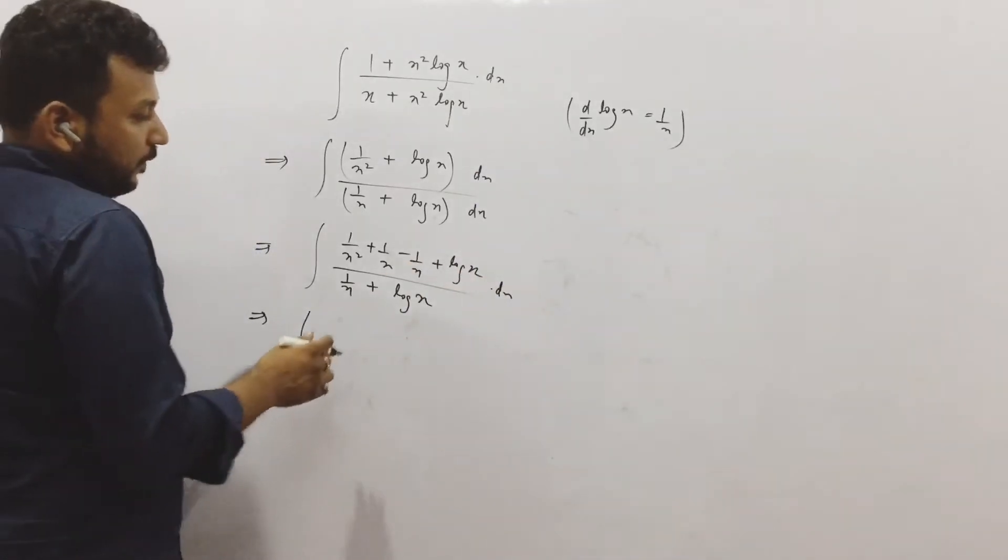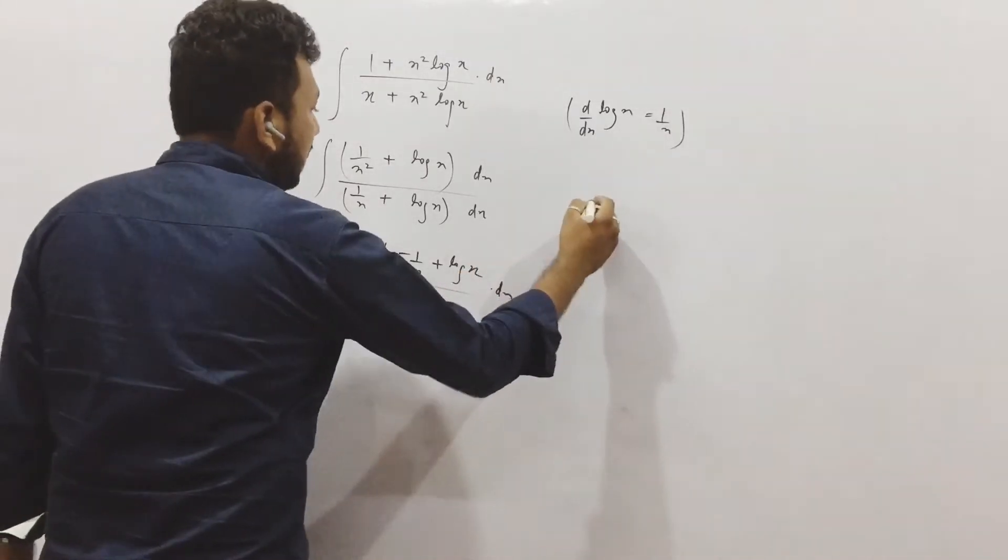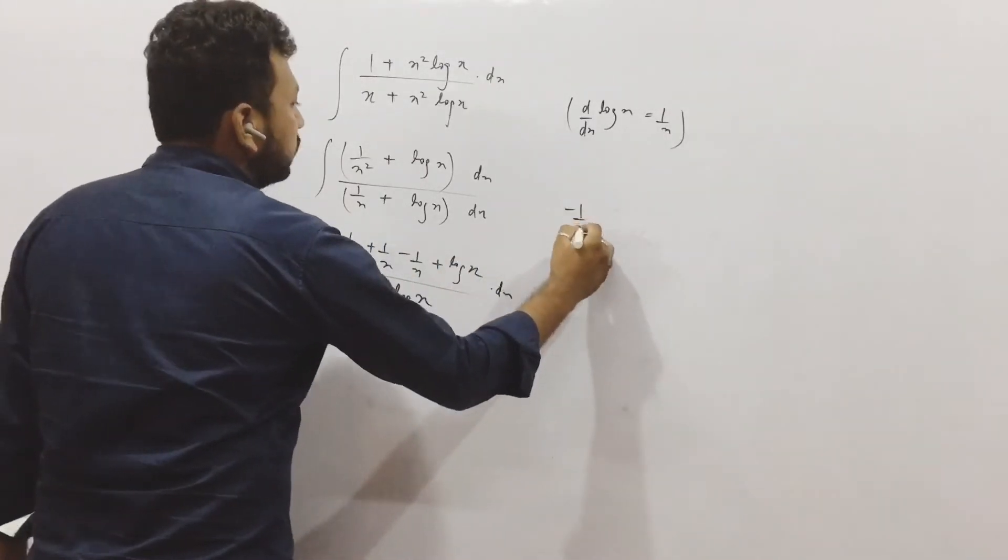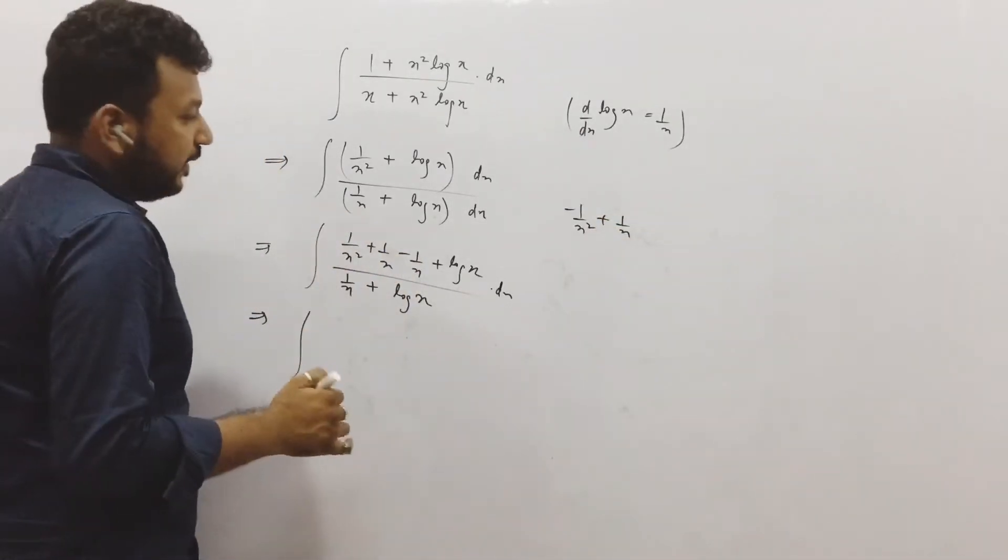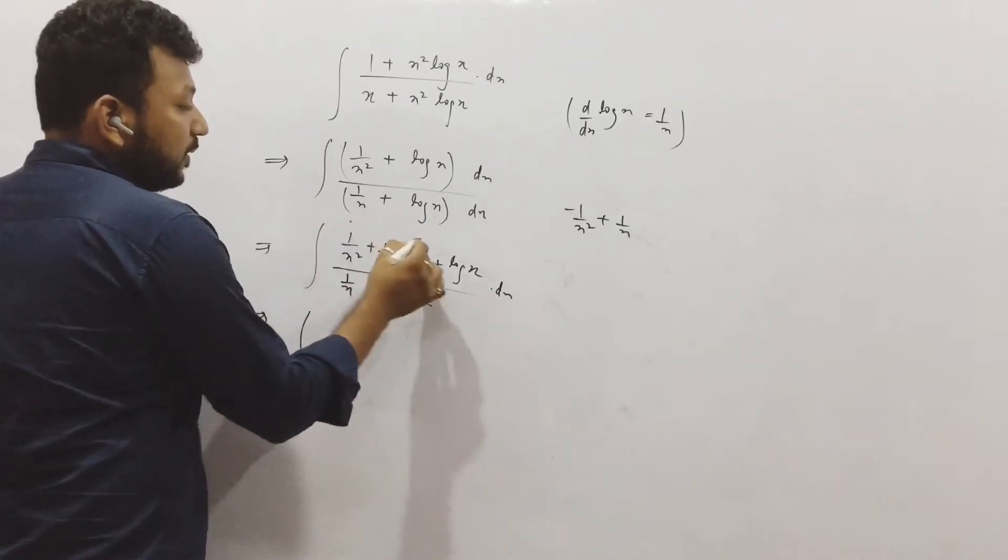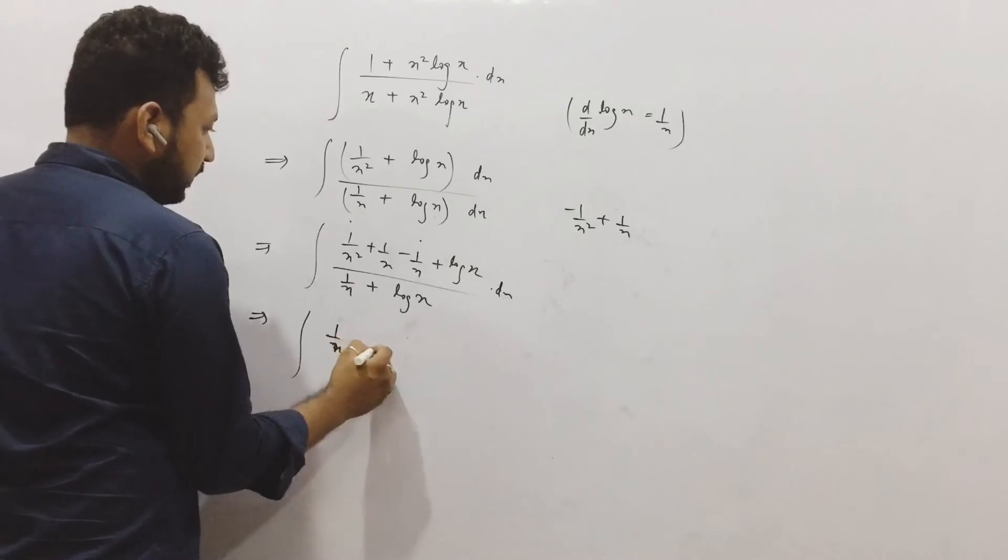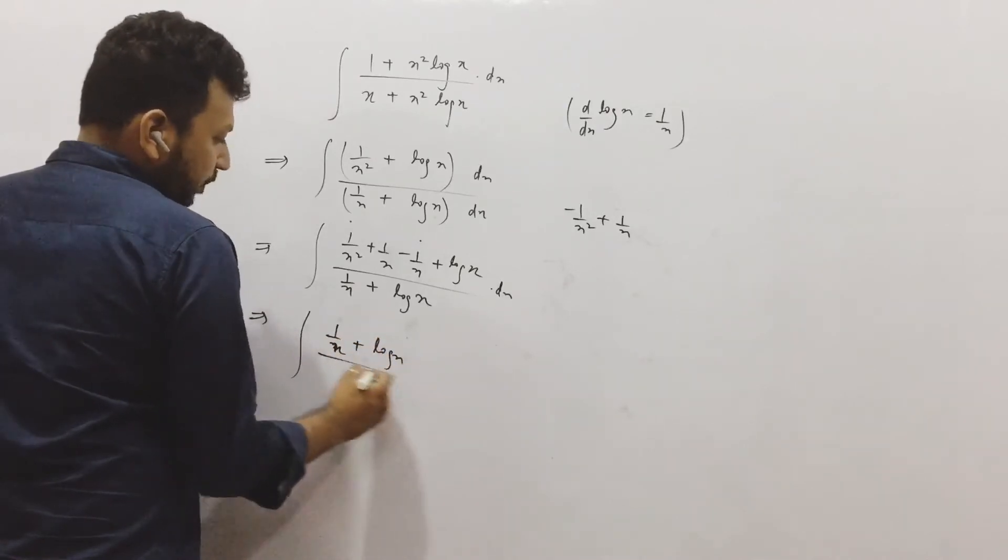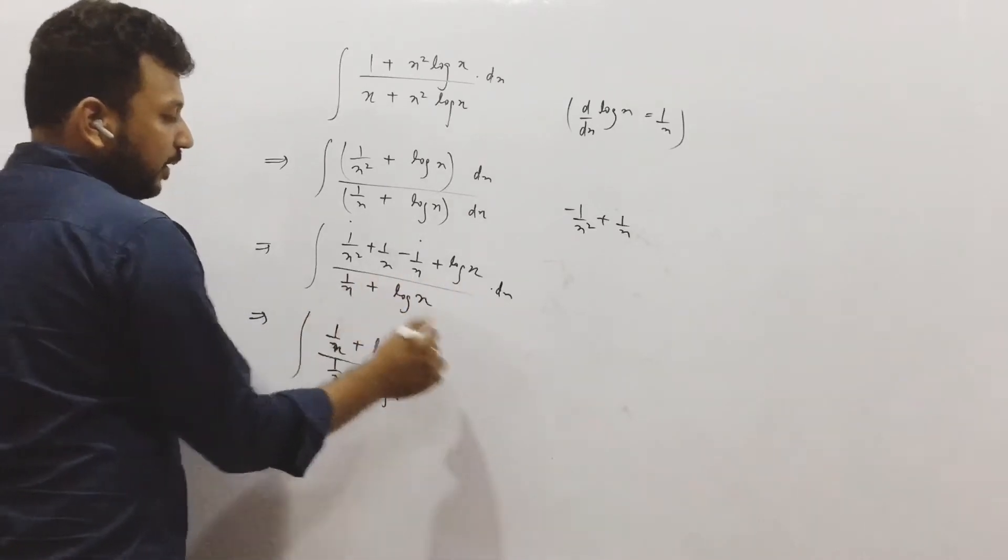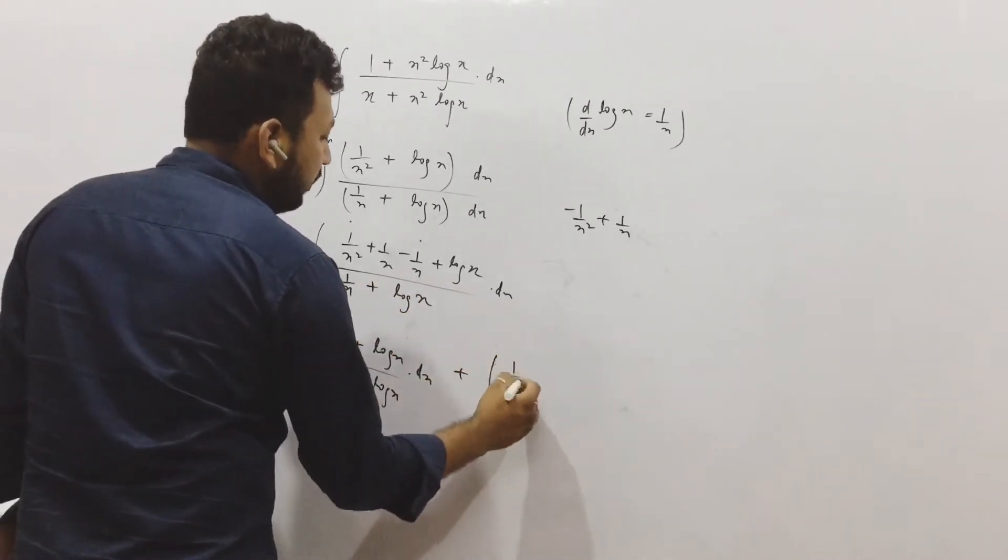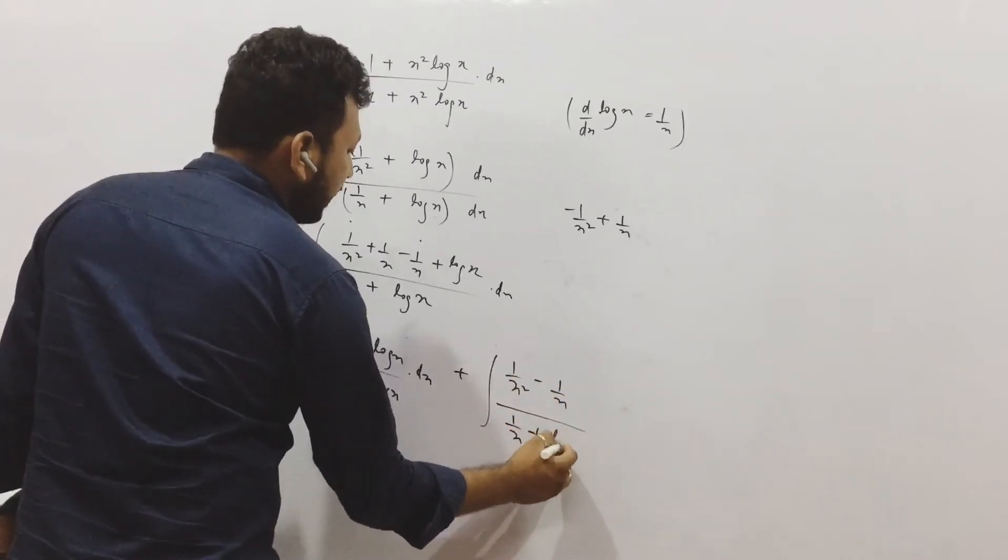So see what I will do. If I consider this as t, what is the derivative of this? Minus 1 by x square plus 1 by x. I have all these terms now, that is why I added and subtracted this. Now I will separate these terms, because the rest of the things will remain here, 1 by x plus log x. As the expression is becoming very easier right, plus integration you can see x square minus 1 by x upon 1 by x plus log x.